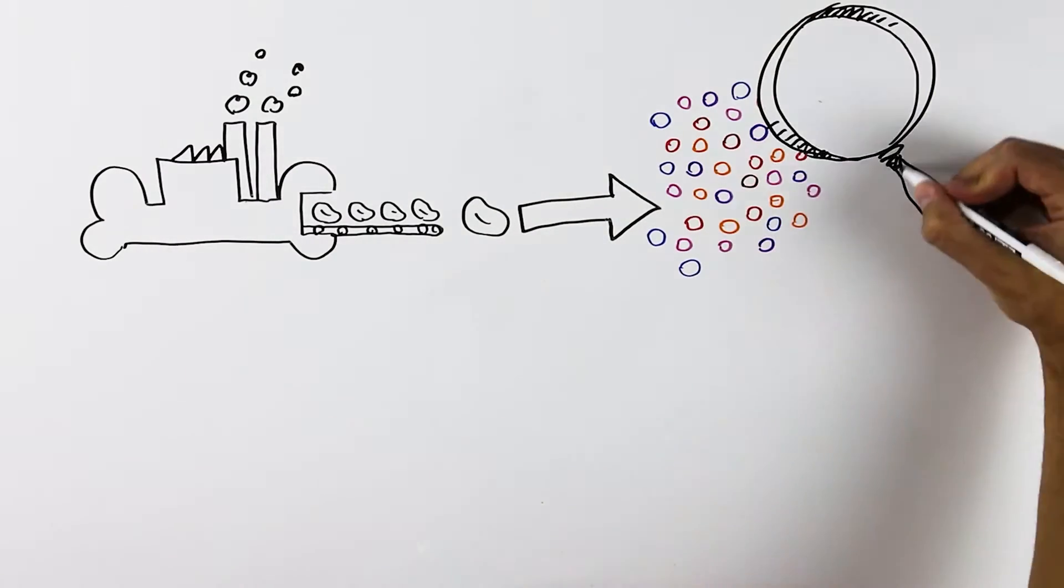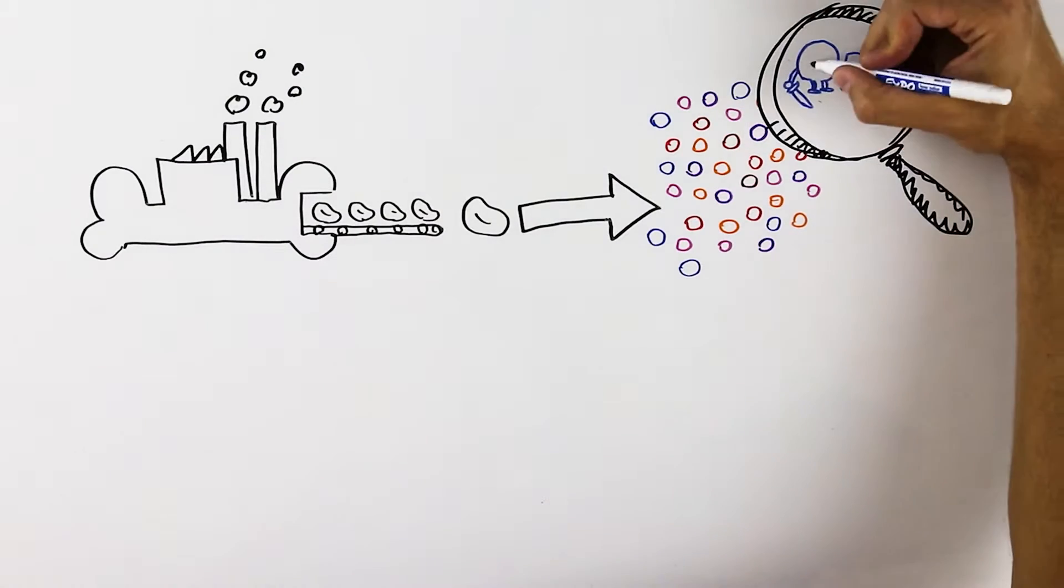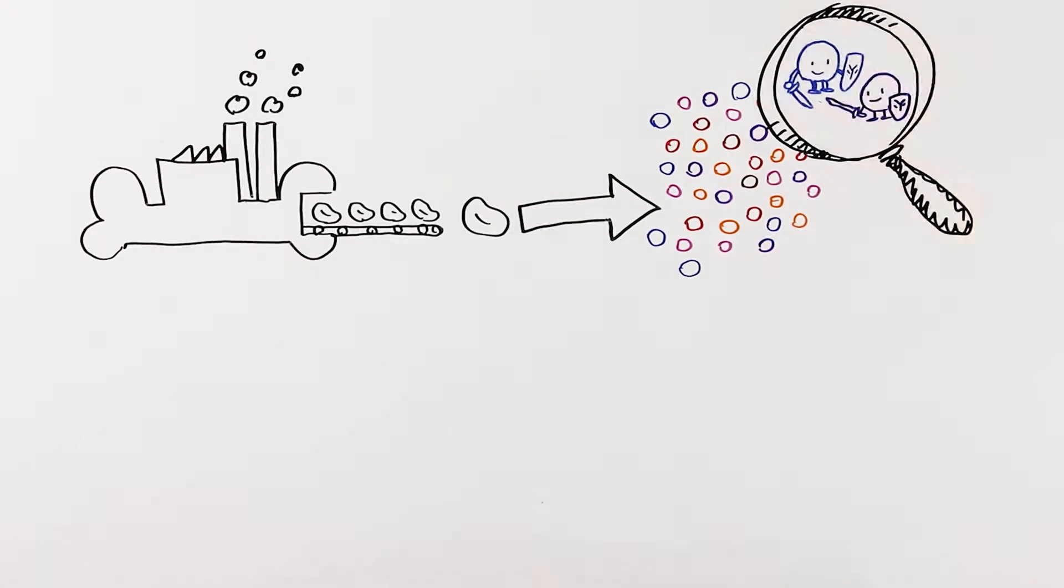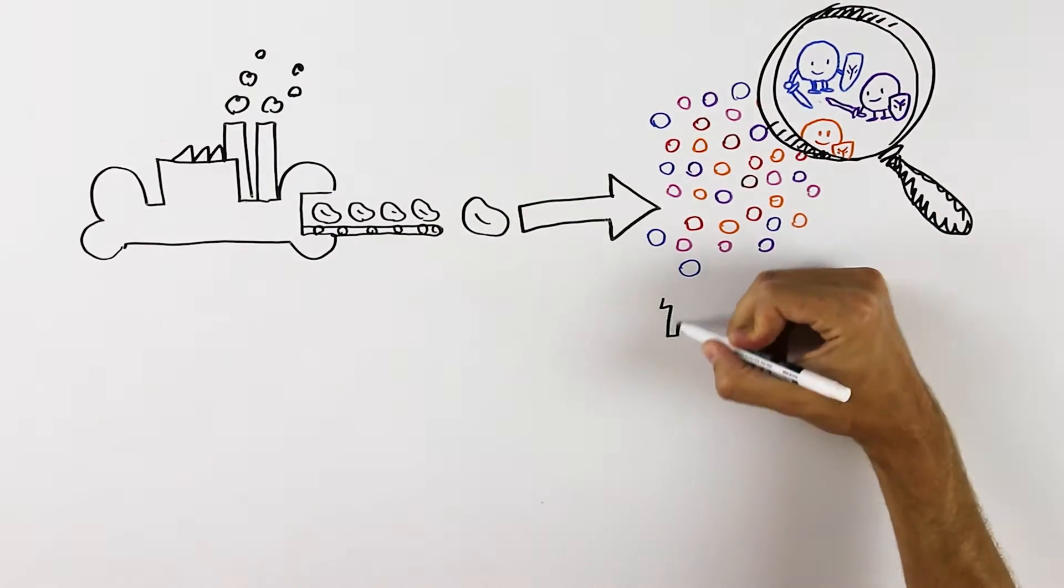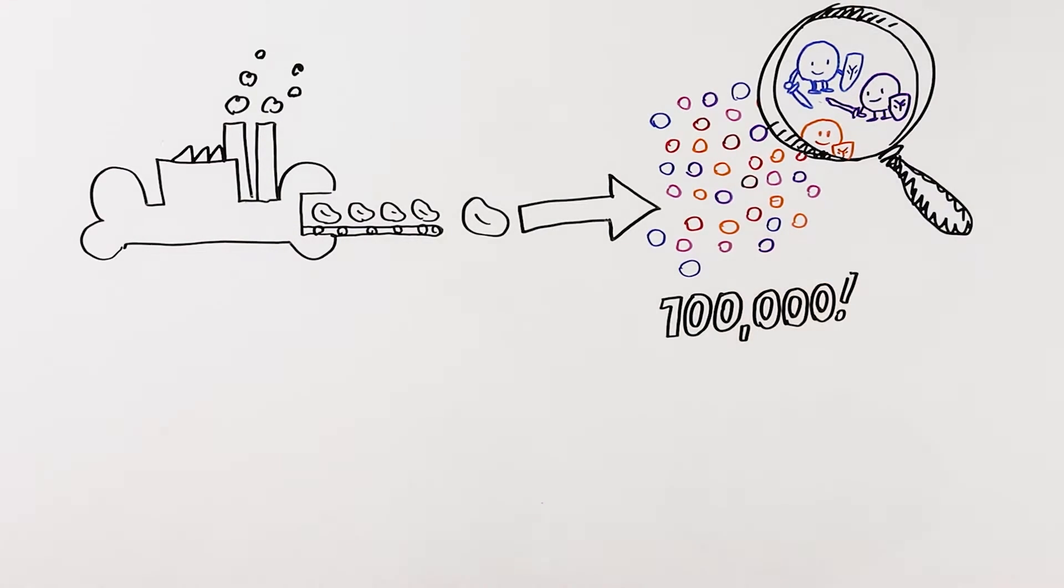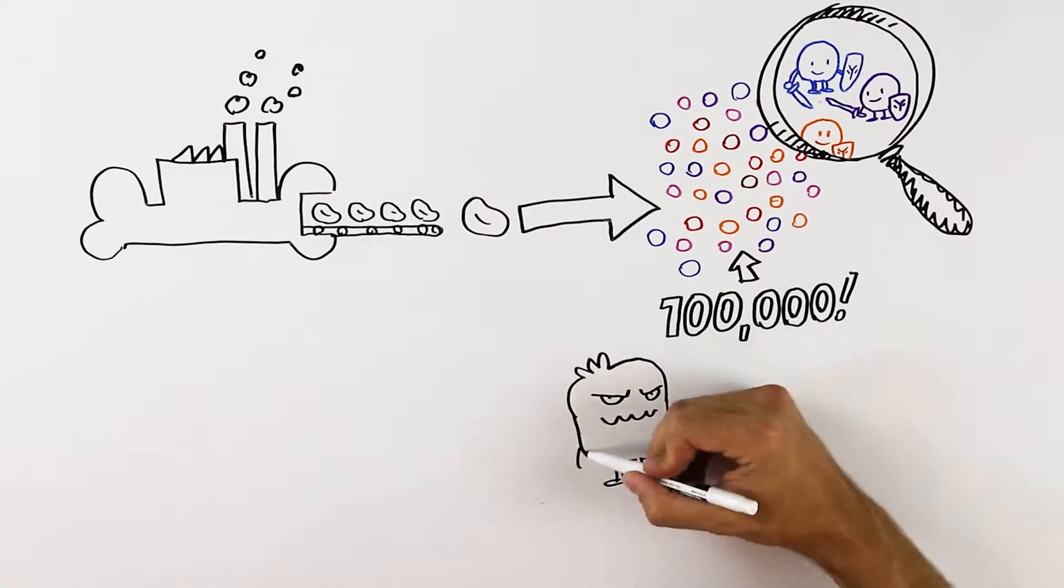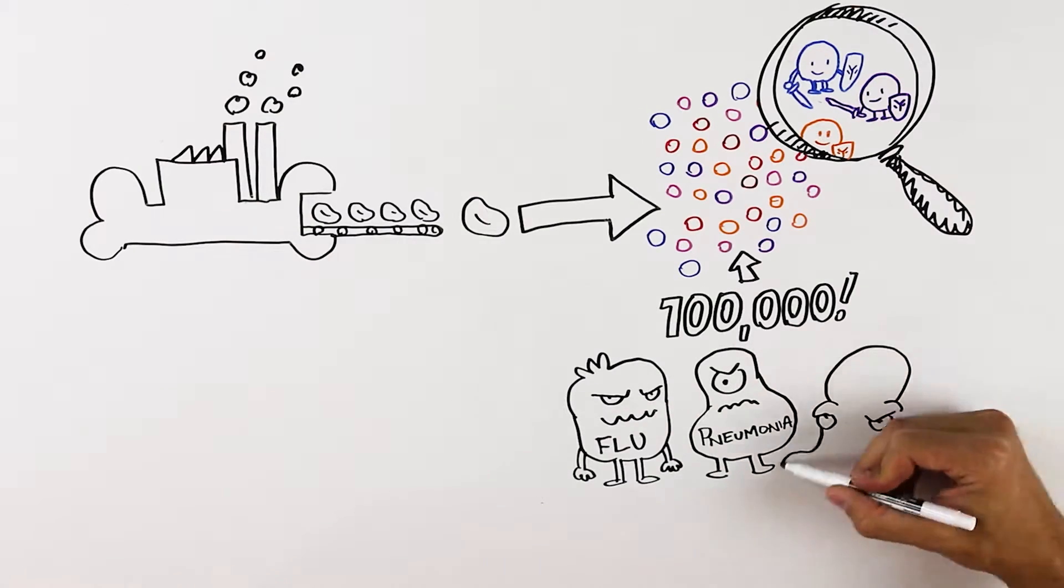These antibodies are like an army of soldiers that fight off a wide variety of infections, viruses, and bacteria. Each of us has over 100,000 different kinds of antibodies, so we can fight off diseases like the flu, pneumonia, and even cancer.